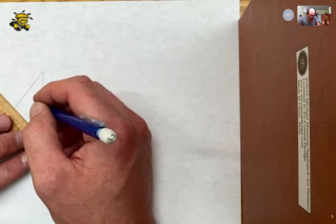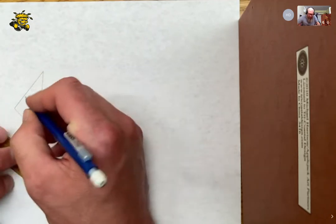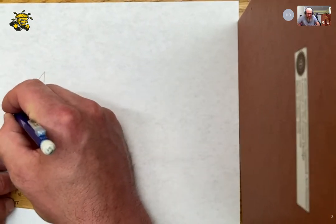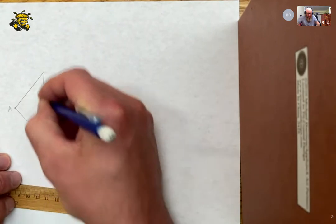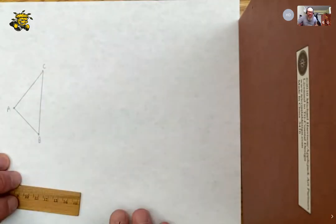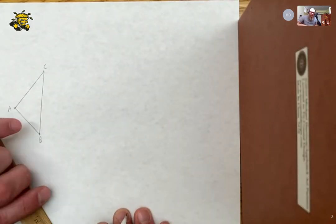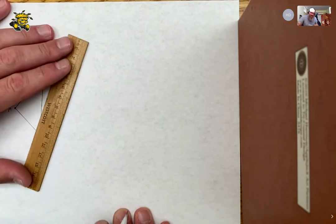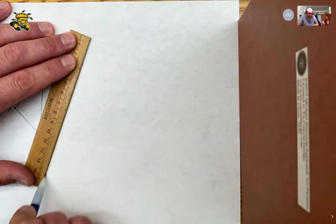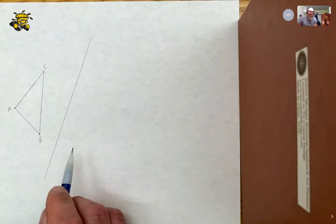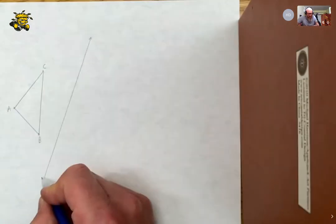And we're going to name these vertices a little bit. So let's call this one A, B, and C. Now we need a line to reflect over. So I'm going to make this line. My straight edge is actually not the longest straight edge you've ever seen in your life, but here's a line L.